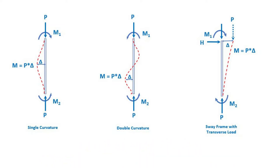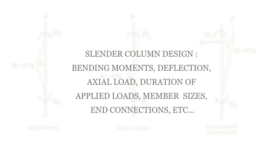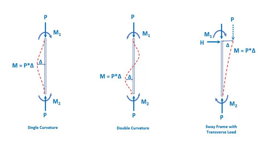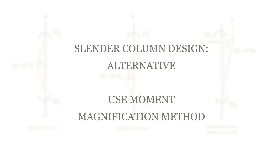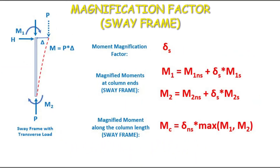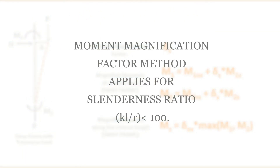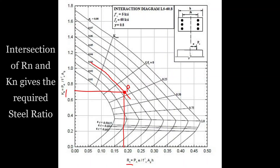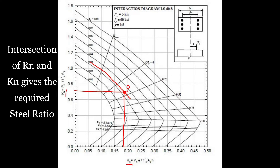Quantifying the P-delta moment is tedious unless we use computer software. ACI code states that the theoretical design of a slender column must account for bending moments, deflections, the effects of actual load and duration of applied loads, varying member sizes, and end connections. But ACI also gives an alternative: an approximation of moments using the moment magnification factor. We take the maximum end moment and multiply it by a magnification factor. The objective is to find the maximum bending moment in a slender column, then use the interaction diagram to get the intersection of the maximum bending moment and the applied axial load, which gives the required steel ratio so we can solve for the required steel area.